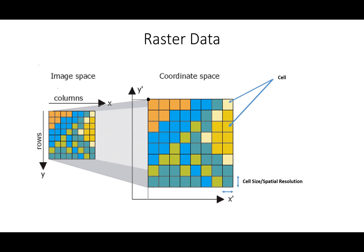A raster dataset in its simplest form is a matrix of cells organized in rows and columns. What you see here are columns and rows. A raster dataset is also identified by its cell size, which represents the x distance and y distance for each grid cell. Most of the time these cells are square, meaning x and y are equal, but sometimes you may find datasets where x and y are different.